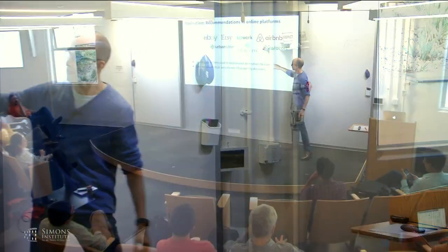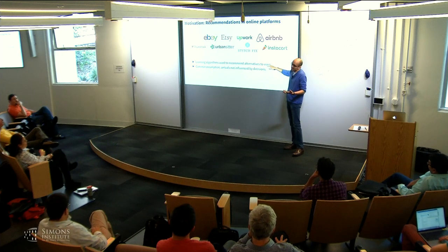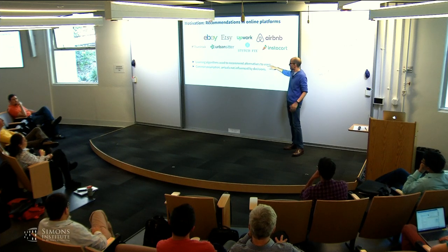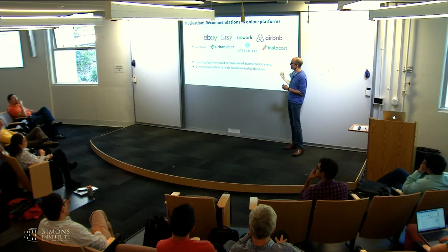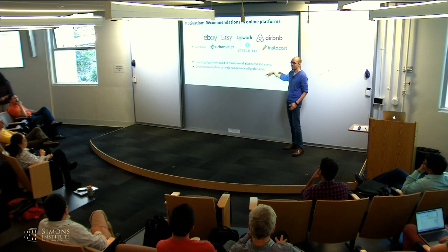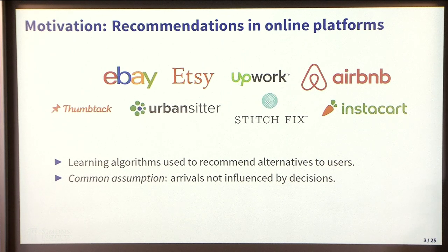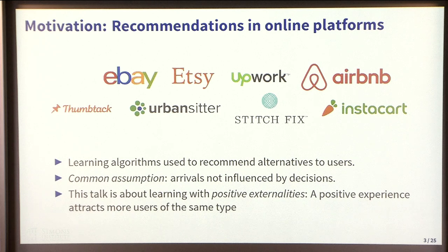One of the things that I find interesting is that usually these platforms will use various types of learning algorithms to determine how to recommend items or jobs or alternatives to users. These algorithms, the way that they're usually developed, the types of guarantees we provide are typically under the presumption that the arrivals are not influenced by the decisions that you make.